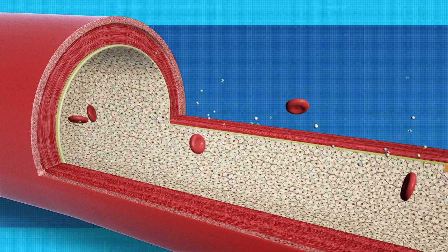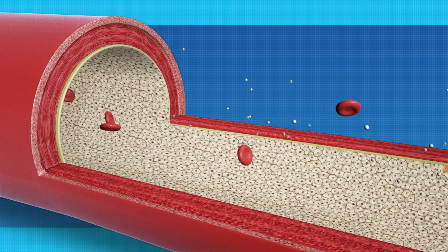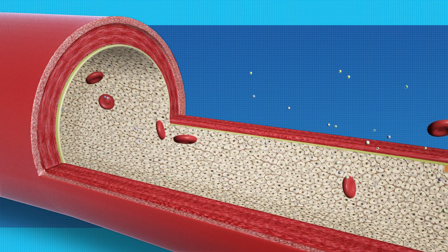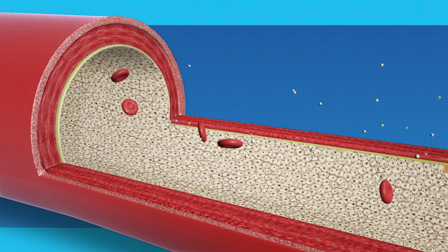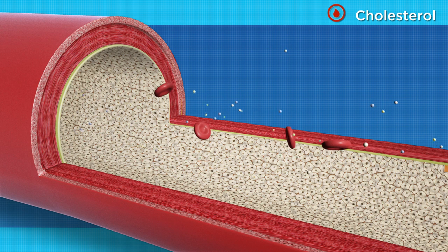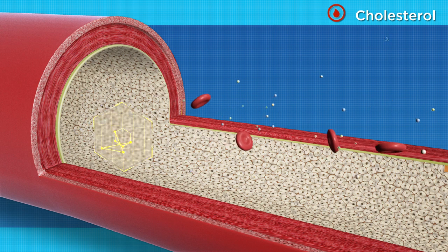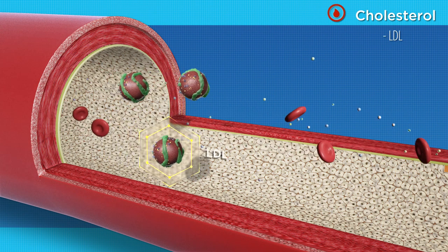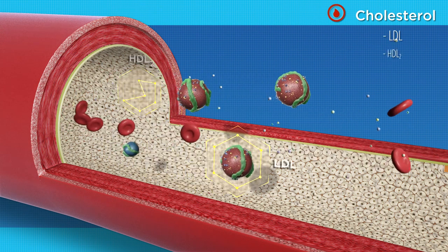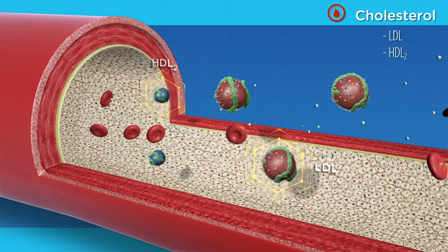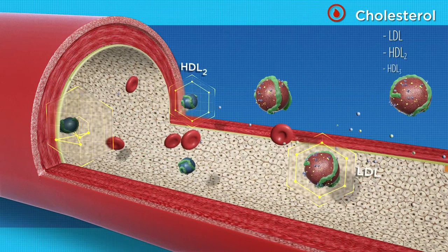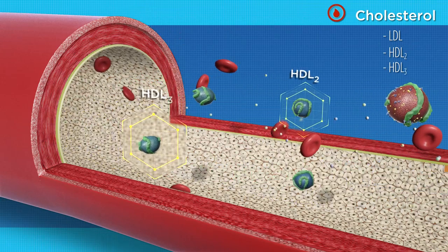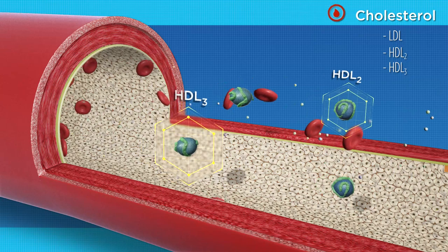That closer look considers three areas of risk for all patients. In the cholesterol category, the VAP Plus directly measures LDL to eliminate the guesswork. It also measures both HDL2 and HDL3 to determine how effectively the body clears cholesterol.